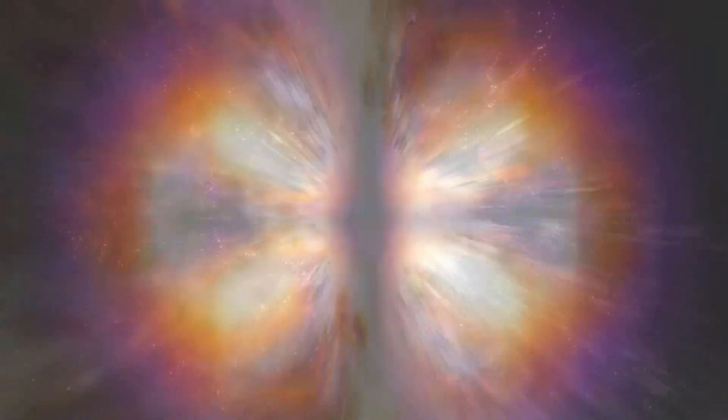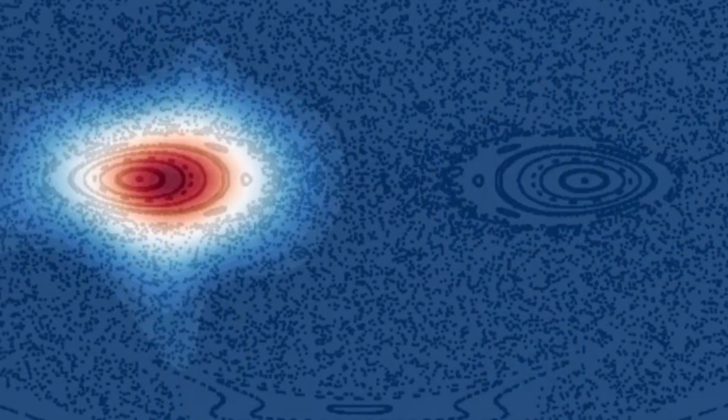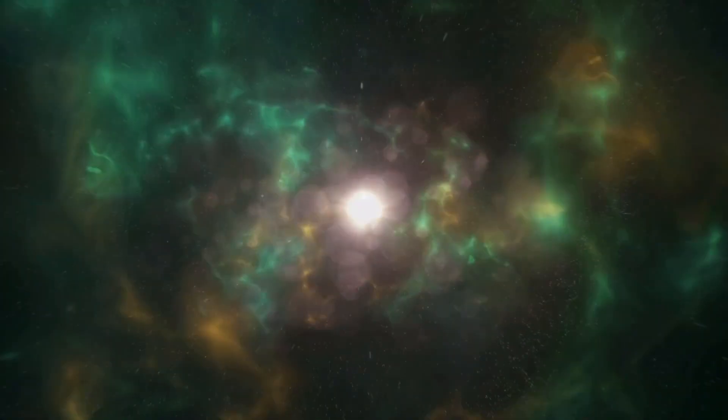The expansion of the universe in the Big Bang refers to the continuous stretching and increasing size of the universe over time. Following the initial singularity, the universe began expanding rapidly in all directions. This expansion is commonly visualized as the stretching of space itself, causing galaxies and other cosmic objects to move away from each other. The evidence for the expansion of the universe comes from observations of the redshift of light from distant galaxies. As the universe expands, the wavelengths of light from distant objects become stretched, resulting in a shift towards the red end of the spectrum.